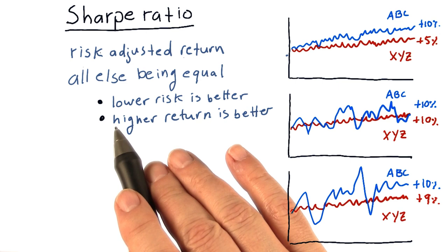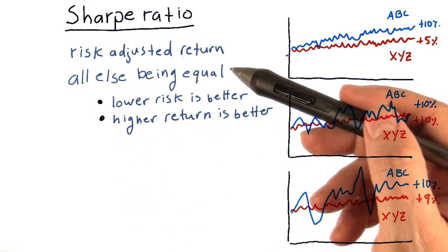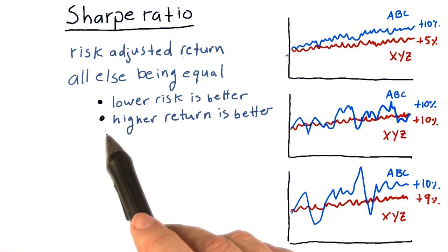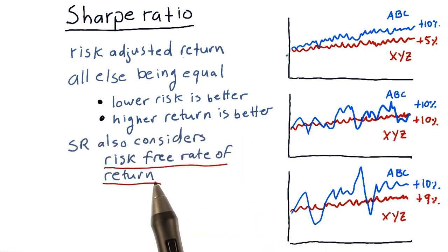So with regard to the numbers that Sharpe ratio ends up providing us, all else being equal, lower risk is better, higher return is better. Sharpe ratio also considers something called the risk-free rate of return.